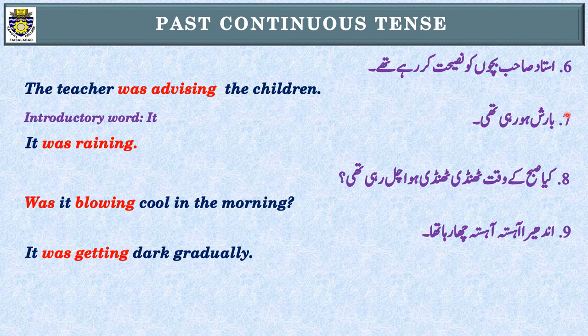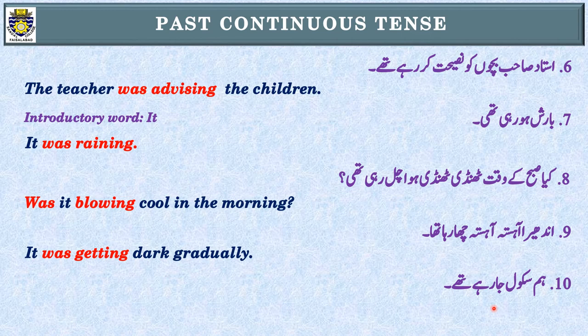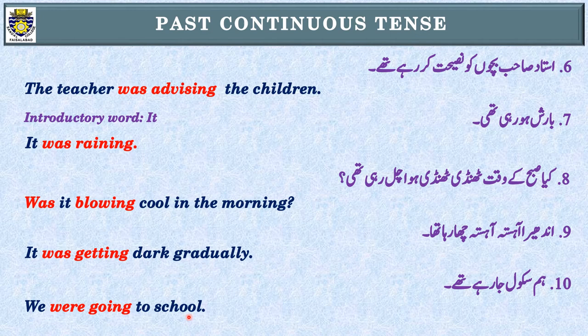Sentence number ten: ہم school جا رہے تھے۔ First step: 'رہے تھے' — Past Continuous Tense۔ Second step: subject — 'ہم'، جس کی English 'we' ہے۔ We plural pronoun ہے، اس کے ساتھ were use کرتے ہیں۔ We were going to school.